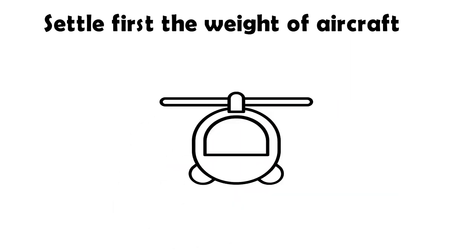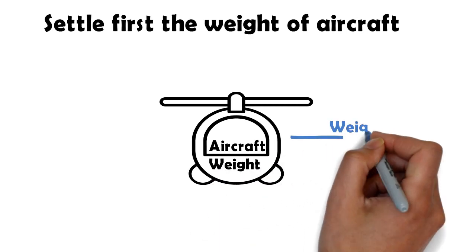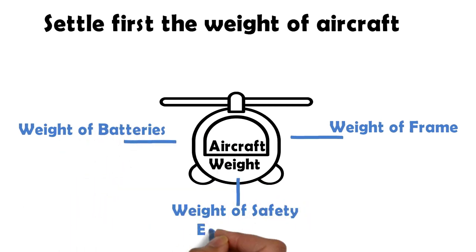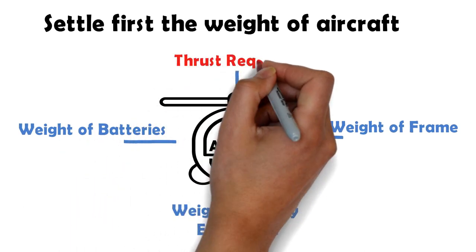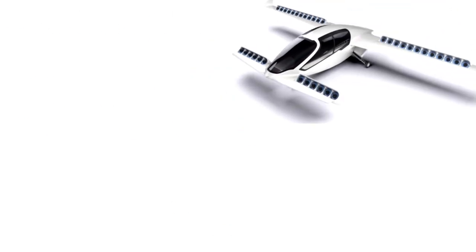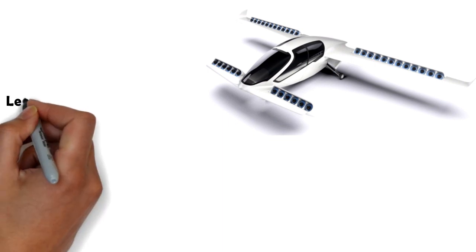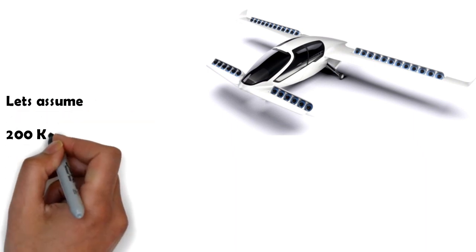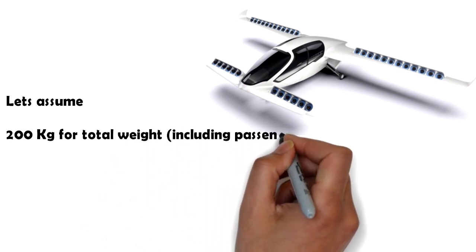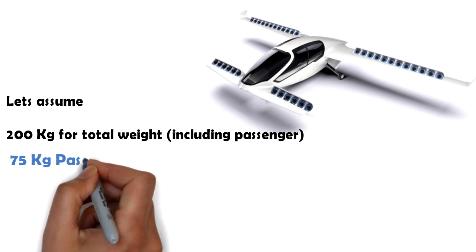We can take 75 kilos for a passenger's weight to be a reasonable estimate. If the total weight of the aircraft with the passenger is limited to 200 kilograms, then this value gives us a good starting point. We can revisit this value later as we change the design. Based on this value we can find out the minimum thrust required for liftoff to be achieved.